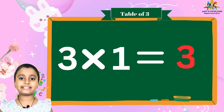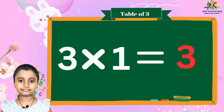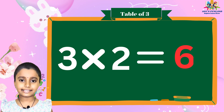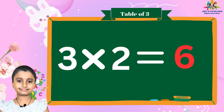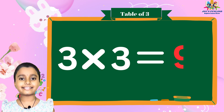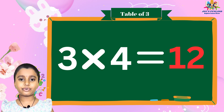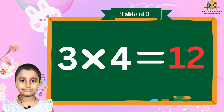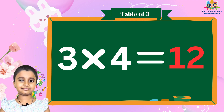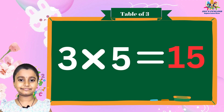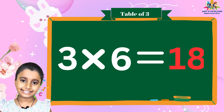3 1's are 3, 3 2's are 6, 3 3's are 9, 3 4's are 12, 3 5's are 15, 3 6's are 18.